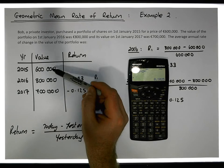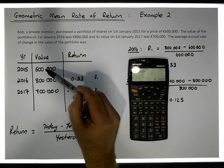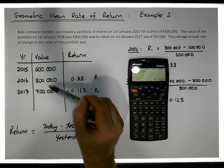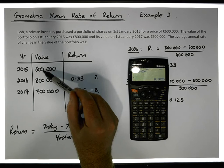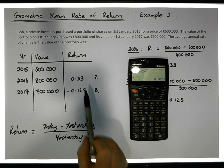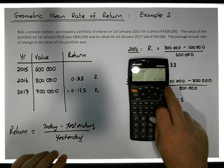But look, in 2015 it was 600,000 euros and today it's 700,000 euros. A 10% increase on that would be 60,000 euros, so it would be 660,000 euros. There seems to be something different going on here with respect to the arithmetic average.